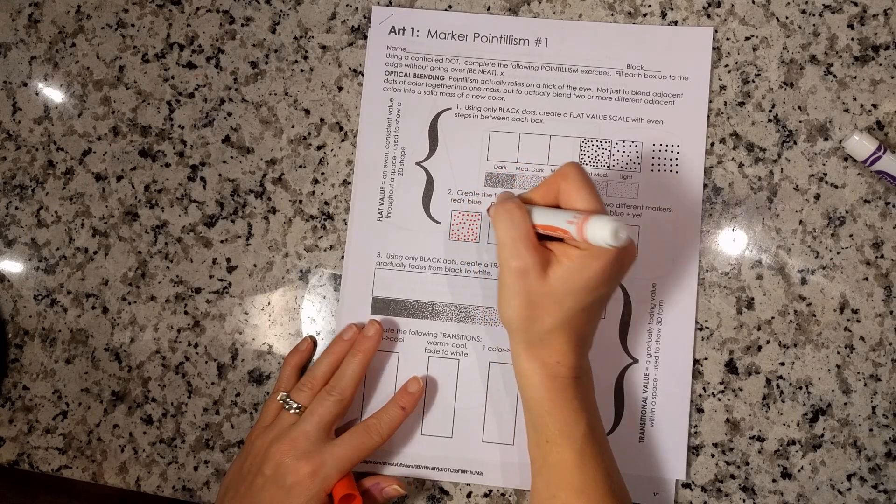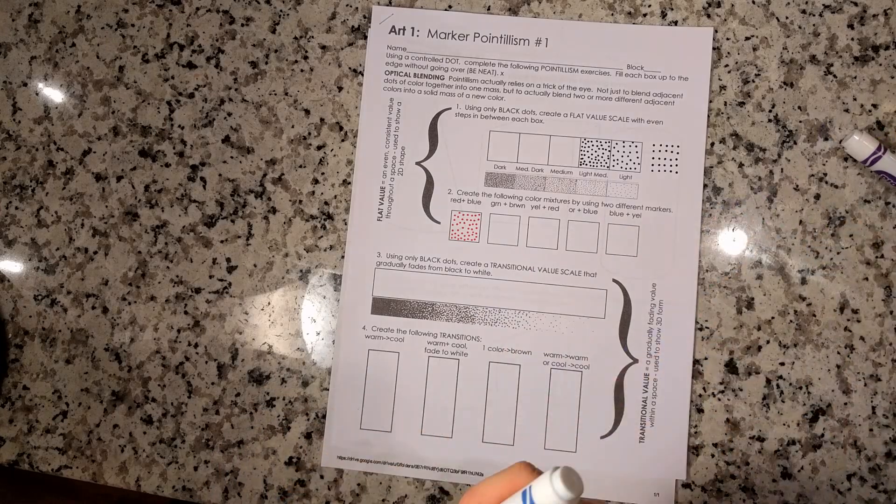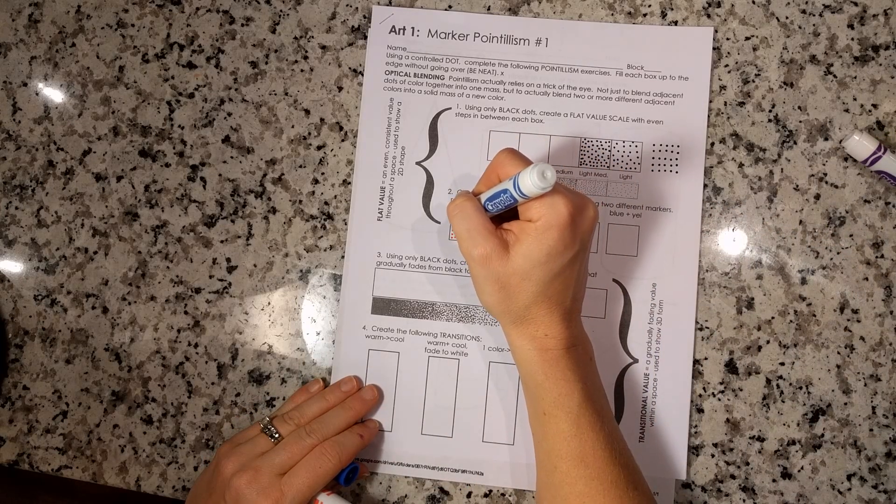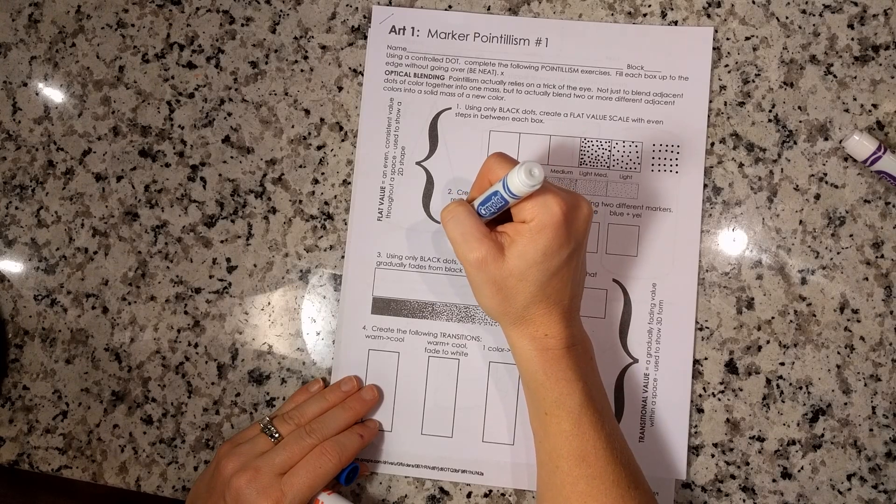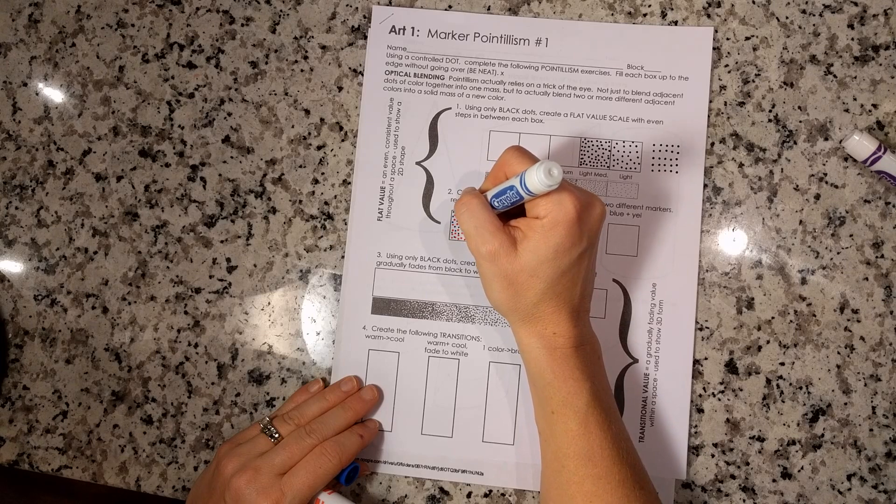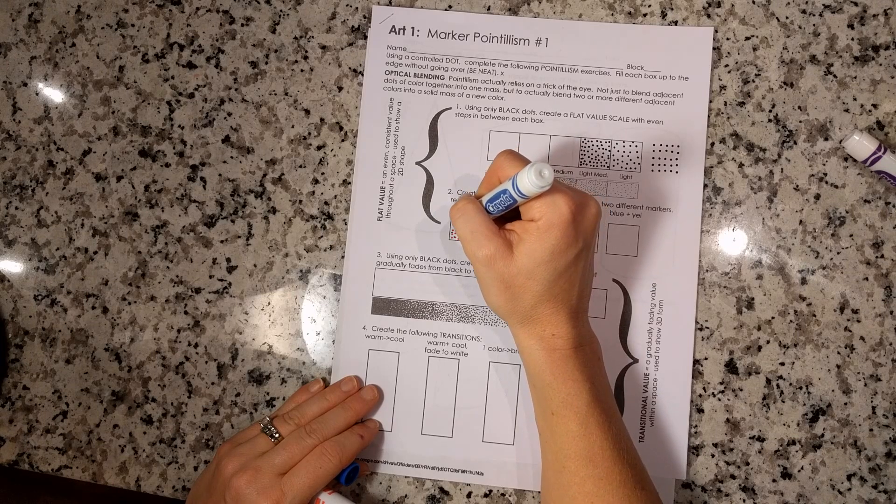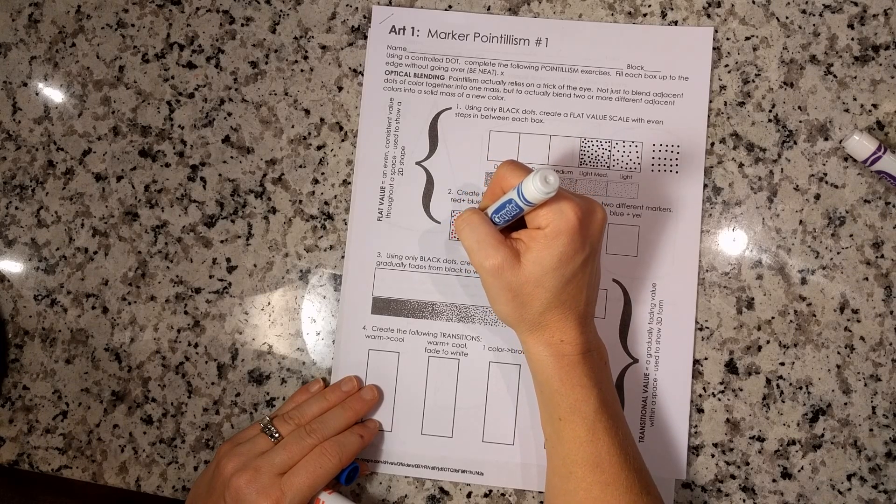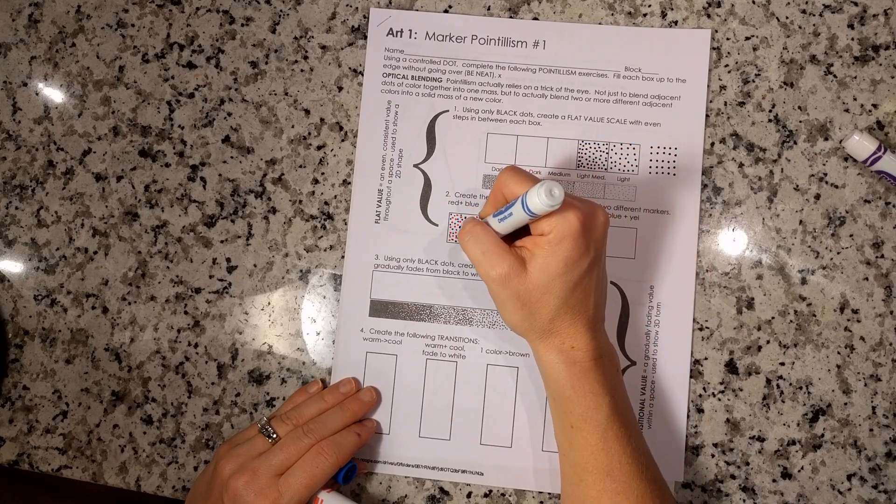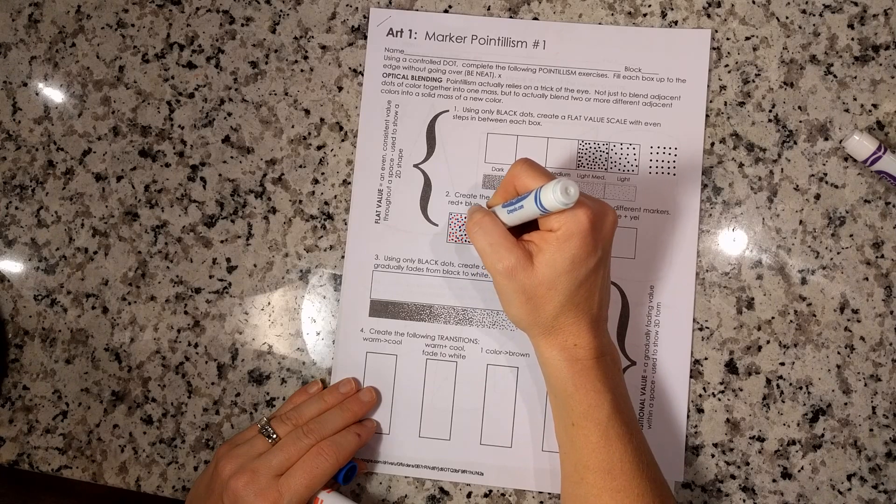Then I'm going to come back with red, then blue, until I have most of the spaces filled in. Each time I'm switching colors, I want to make sure that the dots are consistently spaced. It is okay if my blue dot touches my red dot. That's going to happen when I cover most of the paper.